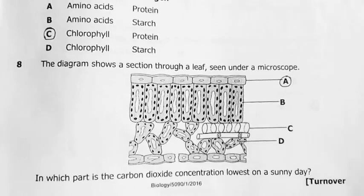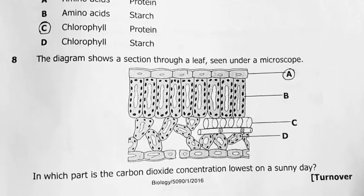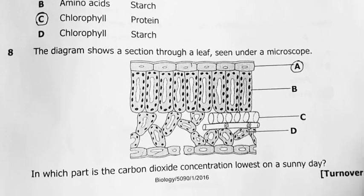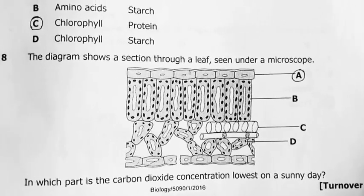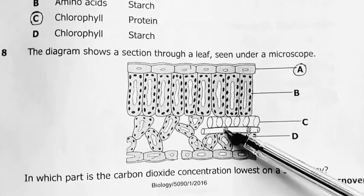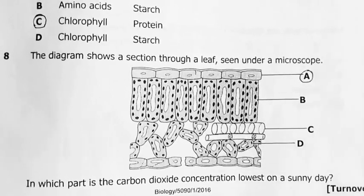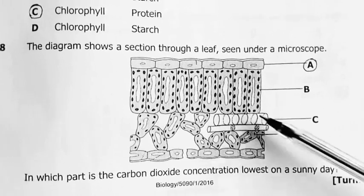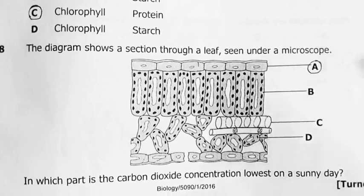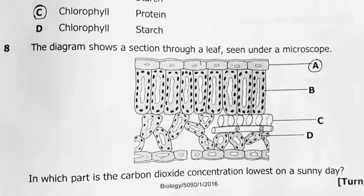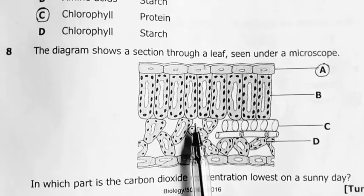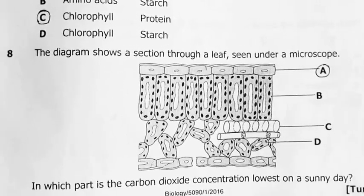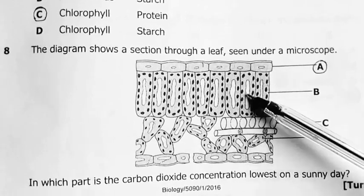Question 8. The diagram shows a section through a leaf seen under a microscope. In which part is the carbon dioxide concentration lowest on a sunny day? On a sunny day, it means photosynthesis is taking place highly. This is our phloem and this is our xylem. The xylem taps water from the ground to the upper parts of the plant. So we cannot talk about carbon dioxide here significantly. But in these regions, these are regions that are using up carbon dioxide. So there's this concentration gradient which is created, which leads to carbon dioxide to diffuse inside here. This is the cuticle layer or the upper epidermis.